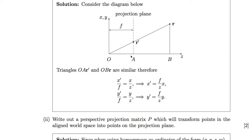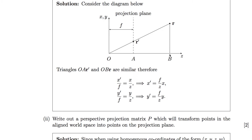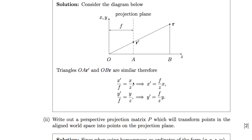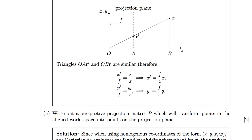The ratio between x-dash and f is the same as x divided by z, because that's the z coordinate for point r. Rearranging gives x-dash equals f over z times x. Doing very similar working for y, we get an analogous result: y-dash equals f over z times y.